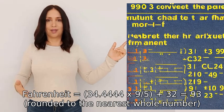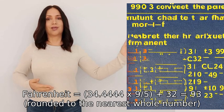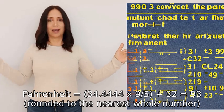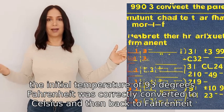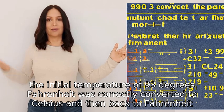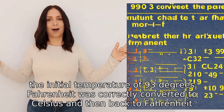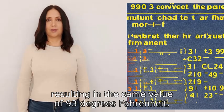This equals 93 rounded to the nearest whole number. As you can see, the initial temperature of 93 degrees Fahrenheit was correctly converted to Celsius and then back to Fahrenheit, resulting in the same value of 93 degrees Fahrenheit.